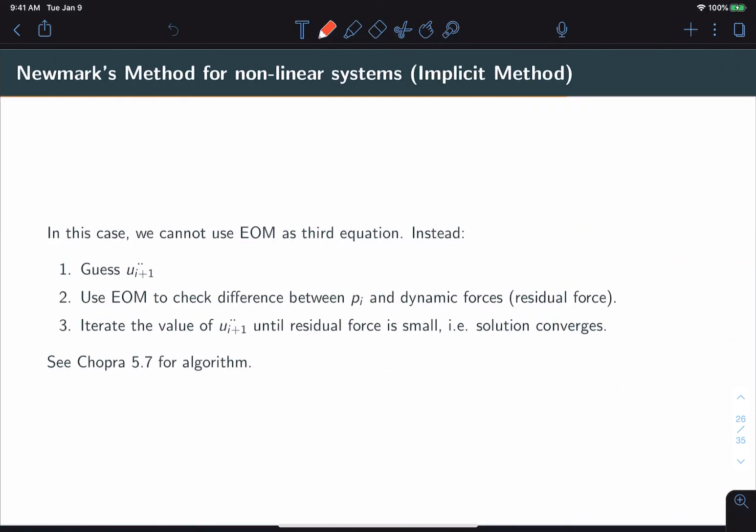In the case of nonlinear systems, we must switch to what is called the implicit method. In this method, we cannot use the equation of motion directly as a third equation. Instead, we must first guess the value of the acceleration at time i plus one, then use that equation of motion to check the difference between pi and the dynamic forces. By dynamic forces, I mean the elastic force, the damping force, and the inertial force. The difference between those two is what we will call the residual force.